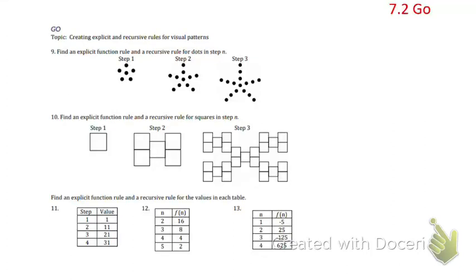In the 7.2 Go, we're reviewing how to do recursive and explicit equations. So what we have here are either arithmetic or geometric sequences, and we're going to write the rules. We're going to write a recursive and explicit rule. The explicit rule is one that you can just substitute any value in. It won't talk about using previous terms, whereas the recursive describes what you do to the previous to make this next term.